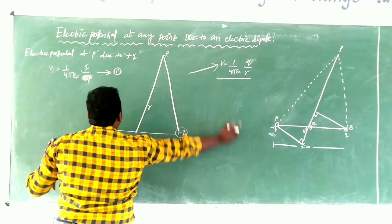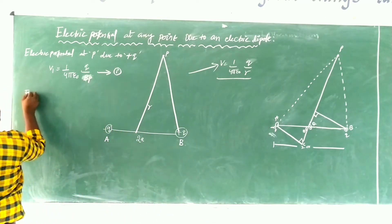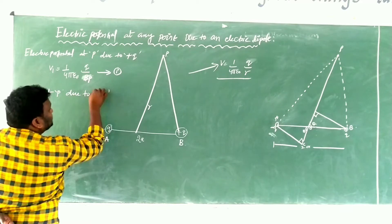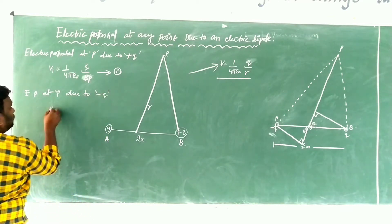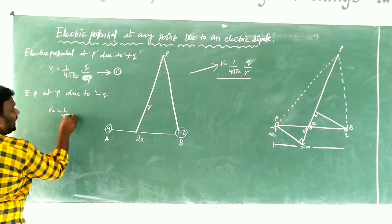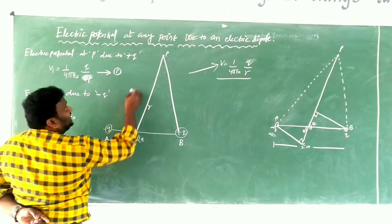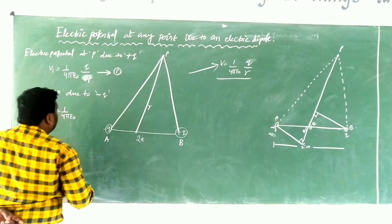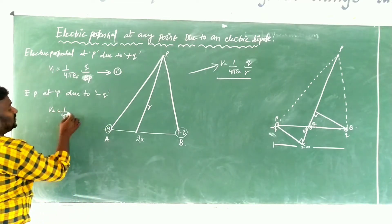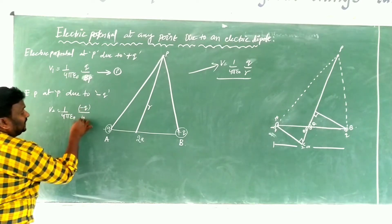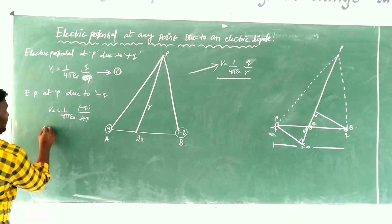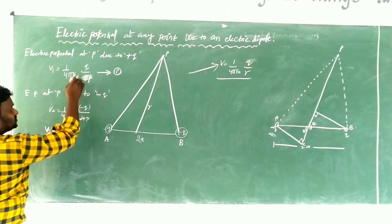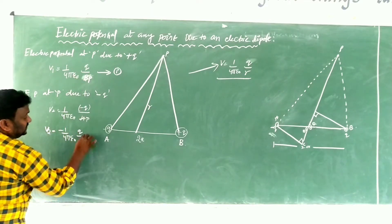Similarly, the electric potential at P due to the negative charge minus Q is: V2 equals 1 by 4 pi epsilon naught, minus Q by AP. That means V2 equals minus 1 by 4 pi epsilon naught, Q by AP. This is equation number 2.